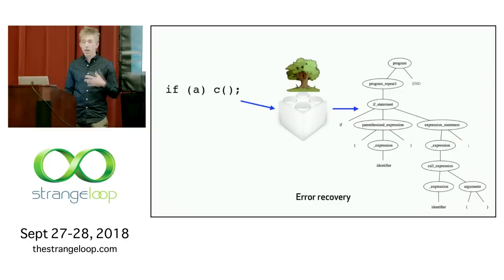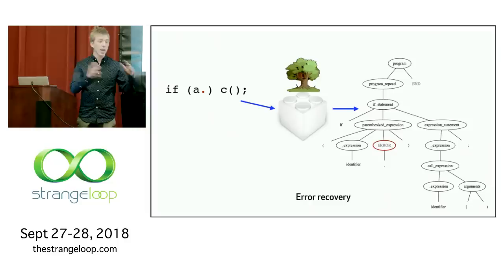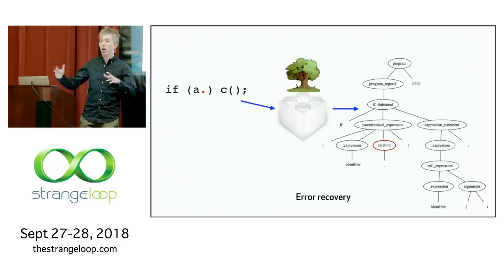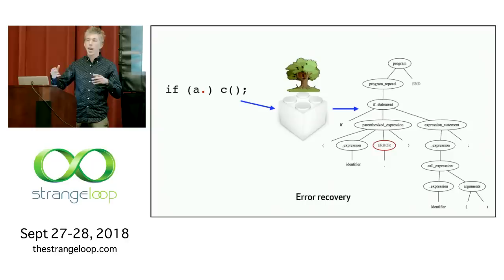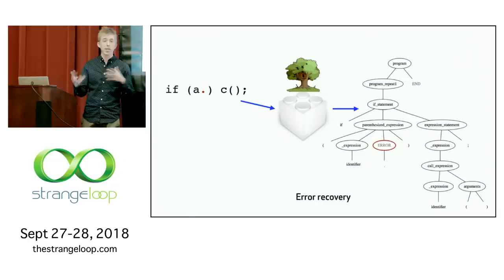The other interesting thing TreeSitter does is what's called error recovery. That means you can give TreeSitter code that is invalid — either because you're in the middle of typing, or because the code uses some non-standard language features the parser doesn't know about. Rather than just aborting and giving you an error message like all commonly used parsers do, TreeSitter has a way of inspecting your code and figuring out where the start and end of every error is, and giving you back a useful syntax tree anyway.